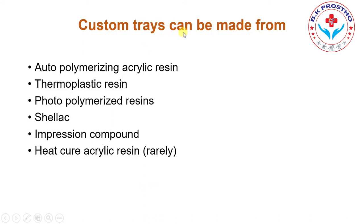Custom trays can be made from different materials. The most commonly used is autopolymerizing acrylic resin. Other materials include thermoplastic resins, photopolymerizing resins cured by light, shellac material, and impression compound. Heat-cured acrylic resins are very rarely used because they require a lengthy procedure involving wax-up, flasking, de-waxing, packing, curing cycle, de-flasking, and finishing.